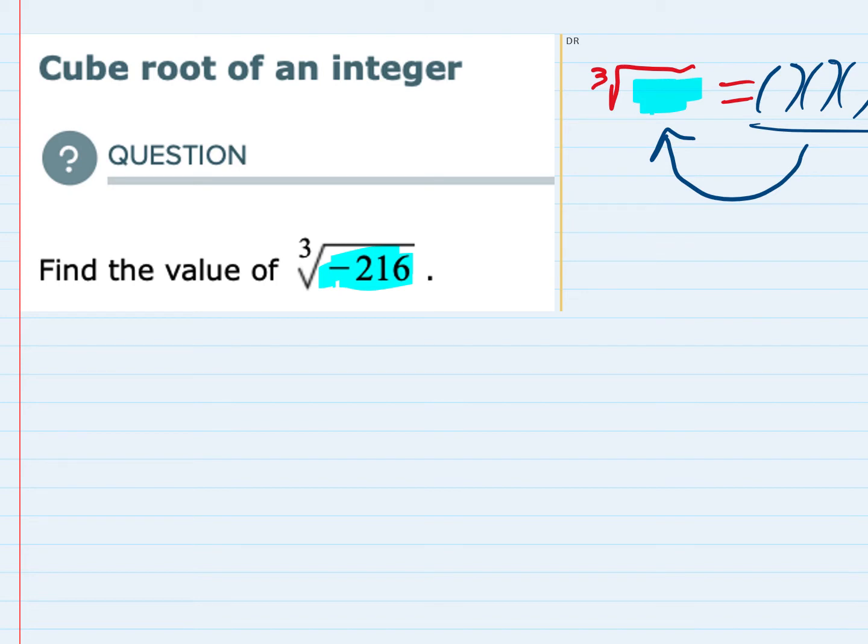But since this is a cube root, we can multiply three numbers together and end up with a negative value because each one could be negative times negative times negative. The first two would result in a positive, and then multiplying the last one would give us a negative.